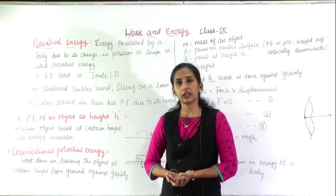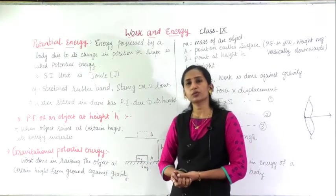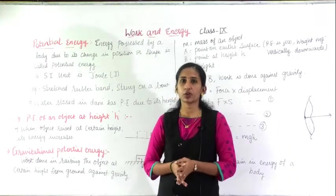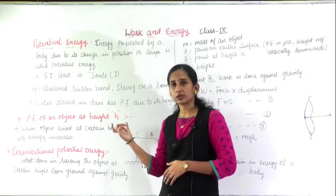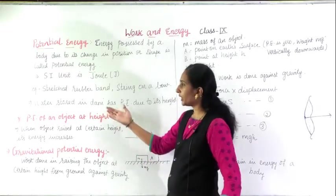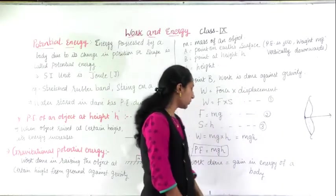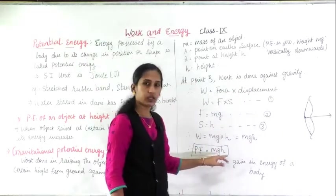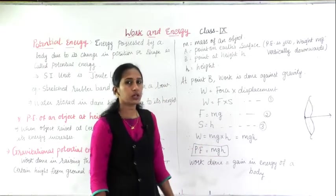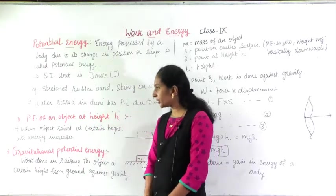As you have seen the derivation of kinetic energy, now you will see the derivation of potential energy. The formula for potential energy is PE equal to mgh. Now we are going to see how this equation comes — we are going to see the derivation of potential energy.